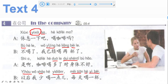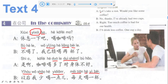This is text four. Repeat after me: 休息一下吧, 喝咖啡吗? 不喝了, 我已经喝两杯了. 是啊, 咖啡喝多了对身体不好. 以后我少喝一点, 每天喝一杯. English: let's take a rest — would you like some coffee? No thanks, I've already had two cups. Right, too much coffee is bad for our health. I'll drink less coffee — one cup a day.